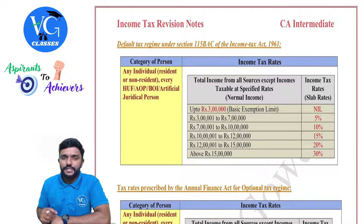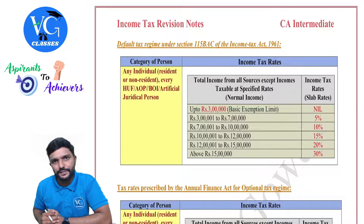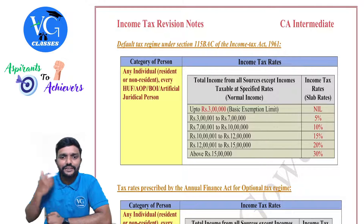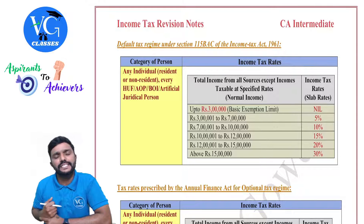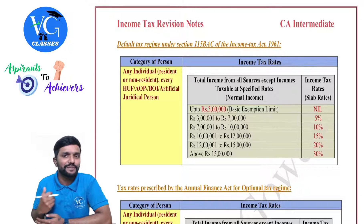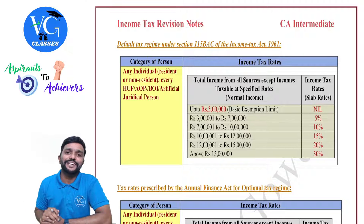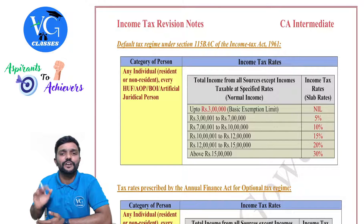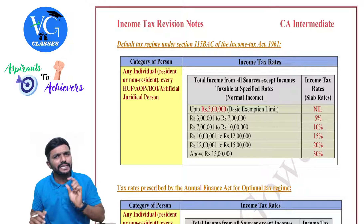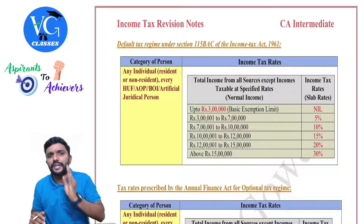Now, coming to the slab rates: up to 3 lakh, the tax rate is nil, which we call the basic exemption limit. From 3 lakh to 7 lakh, it is 5%. Then from 7 lakh to 10 lakh, it is 10%. Then from 10 lakh to 12 lakh, it is 15%. Then 12 to 15 lakh, it is 20%. And more than 15 lakh, it is always 30%. We call this the slab rates, and there is a slight amendment in this as per the Finance Act 2024.